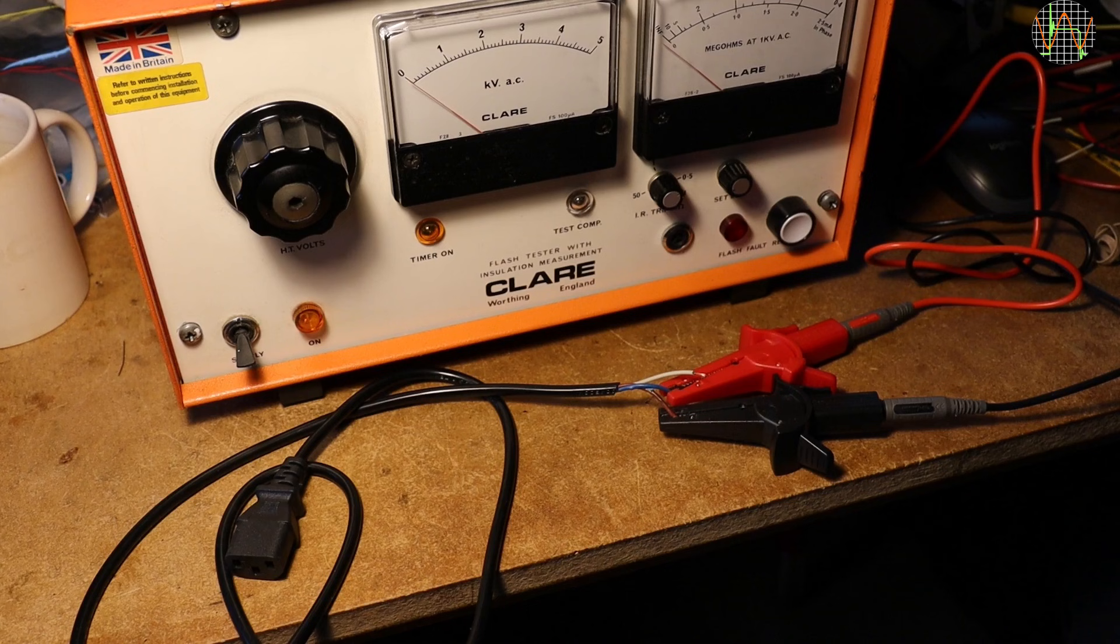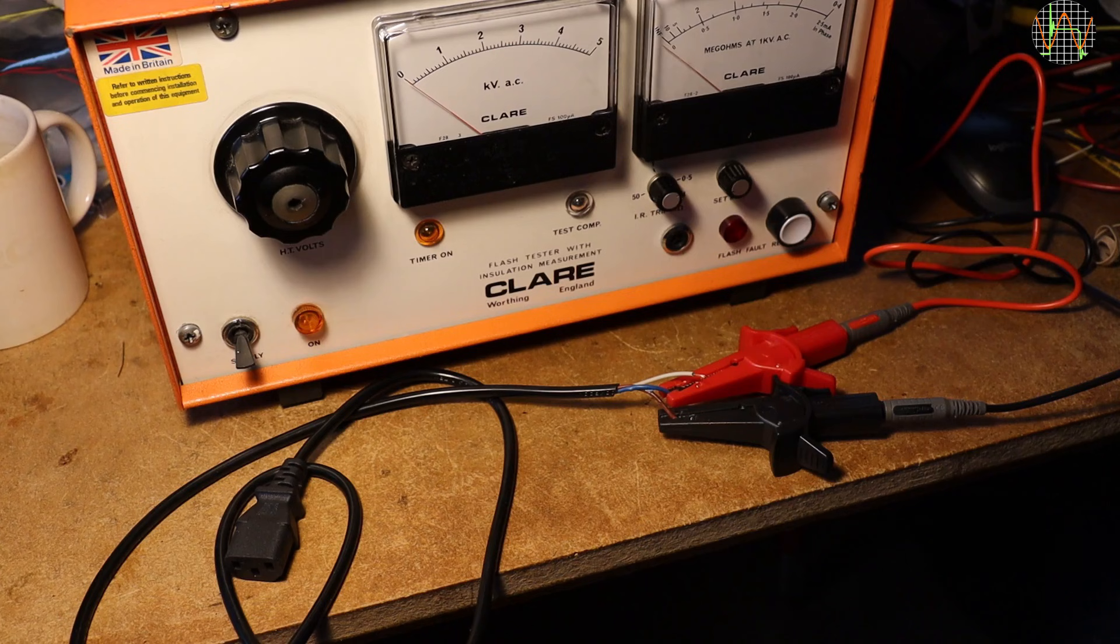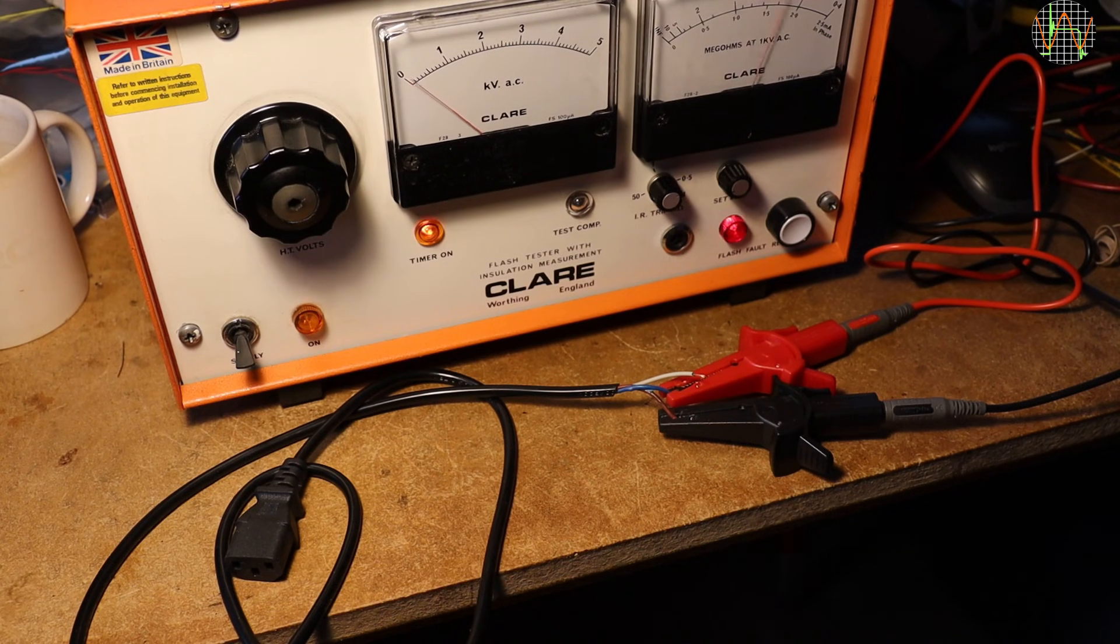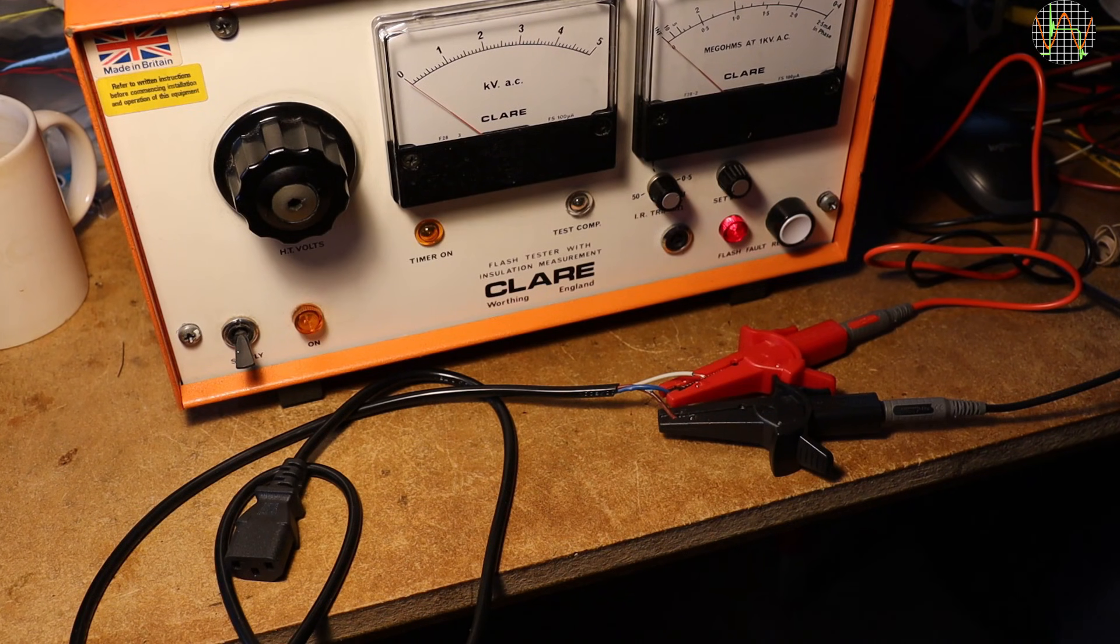But the Extech was limited to 1000V, and the Clare is not. I have set it to its full 5000V capability. And we have an immediate flashover. Somewhere inside the cable, I can also smell some burning.